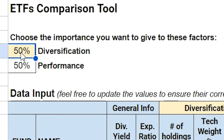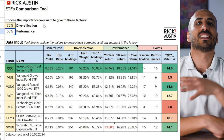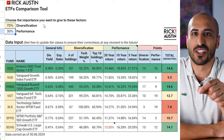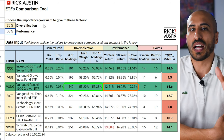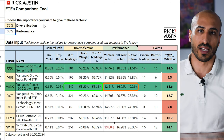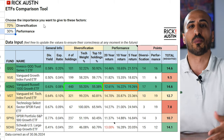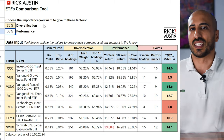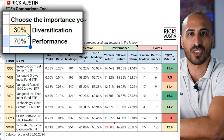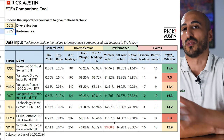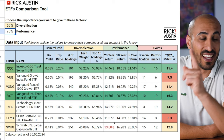If I set diversification to 70% and performance to 30%, QQQ is still the best ETF, but now VONG ties with it — VONG is slightly weaker on performance but has great diversification with 440 holdings and good sector distribution. VGT drops to 12.7 points with performance weighted at only 30%. Conversely, if I set diversification to 30% and performance to 70%, VGT obviously becomes the winner — but importantly, QQQ remains a very close number two.